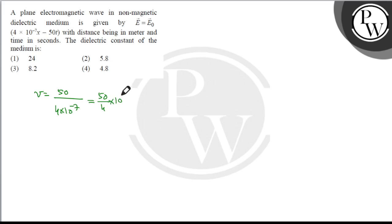We can simplify this as 25 by 2, or 25 into 5 into 10 to the power 6, that is 125 into 10 to the power 6 meter per second.